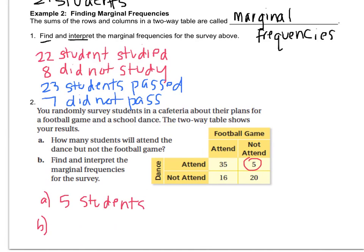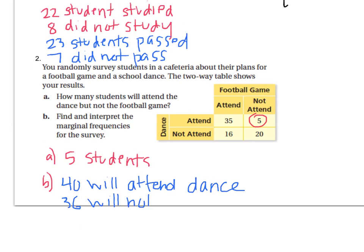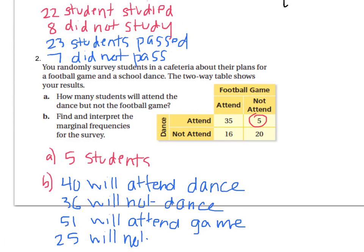Find and interpret the marginal frequencies for the survey. There are going to be four answers: 40 will attend the dance, 36 will not dance, 51 will attend the game, and 25 will not go to the game. I got those numbers by just adding the row or column.